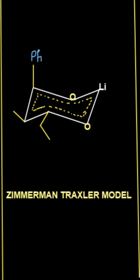What Zimmerman Traxler model says is that the bulky part of the enolate ion will always occupy the axial position, while the bulky group of your second carbonyl compound will take the equatorial position.